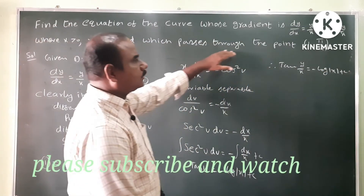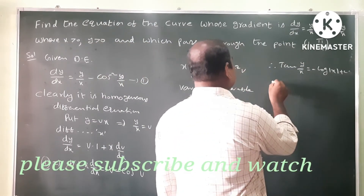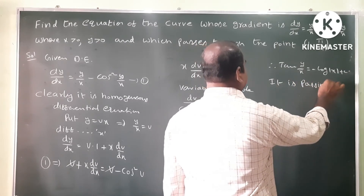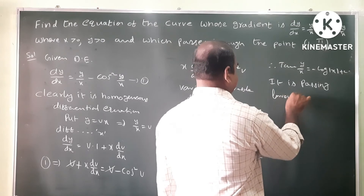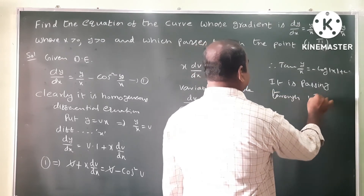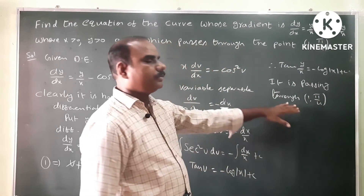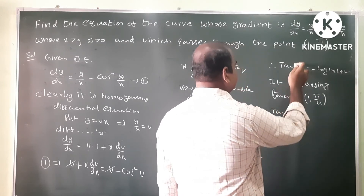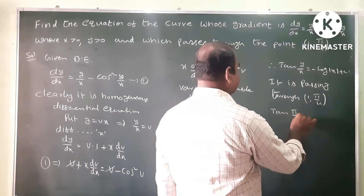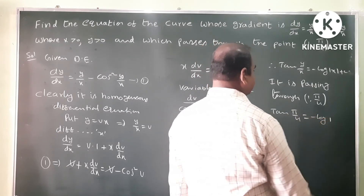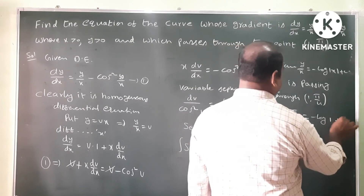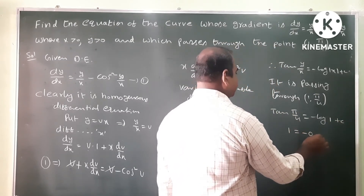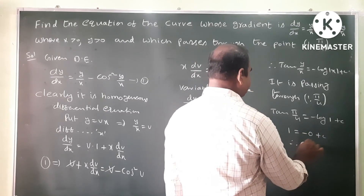The curve passes through the point (1, π/4). Substituting x equals 1 and y equals π/4: tan(π/4 divided by 1) equals minus log mod 1 plus c. Since tan(45°) equals 1 and log 1 equals 0, we get 1 equals 0 plus c, therefore c equals 1.